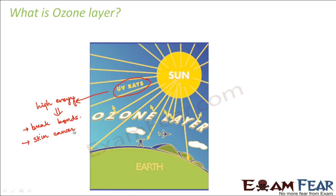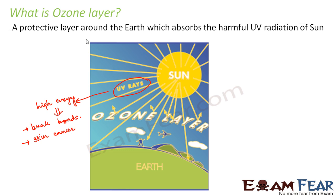And that is where the ozone layer comes into picture. The ozone layer is nothing but a layer formed of ozone — it is just like a blanket, like the way we have an atmosphere. In a similar way, we have an ozone layer and this layer protects us from the harmful ultraviolet radiation coming from the sun. It is a protective layer around the earth which absorbs the harmful ultraviolet radiation. So when ultraviolet radiation comes in, it gets absorbed by the ozone layer and cannot reach the earth. So it is a protective layer for us.